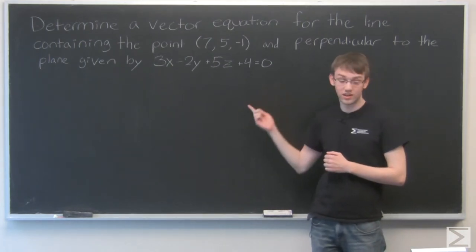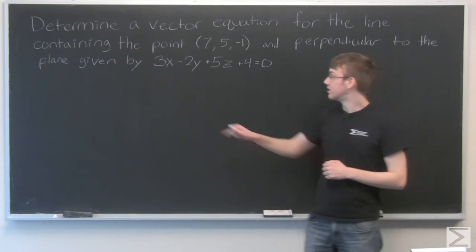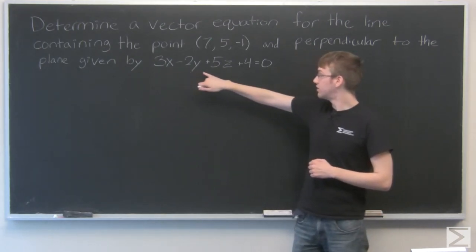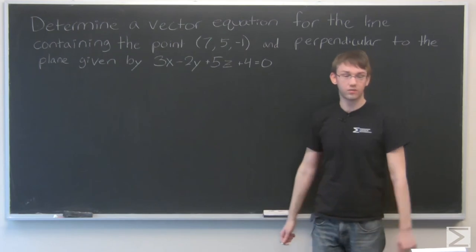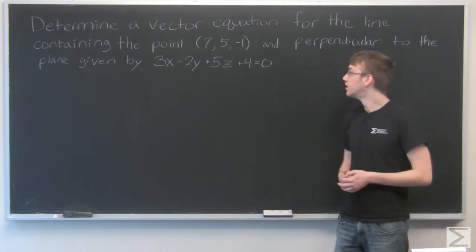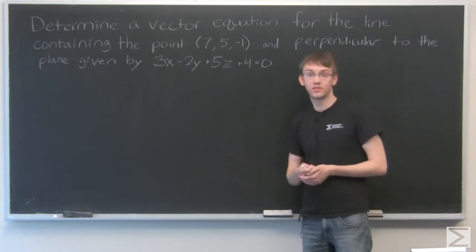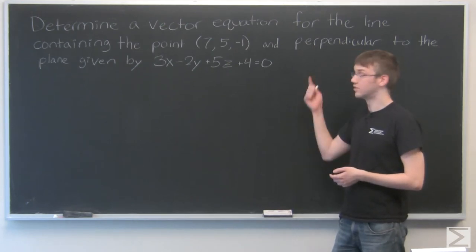Now, according to the standard equation of a plane, that means that the numbers 3, negative 2, and 5 are components of the normal vector to that plane, so because it's the normal vector that means it's parallel to the line that we want to write.